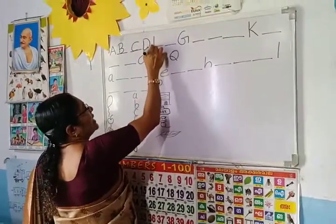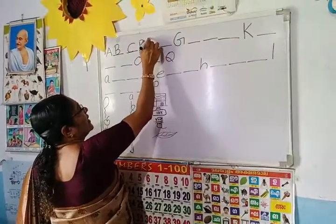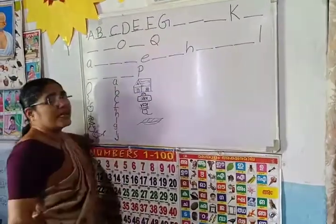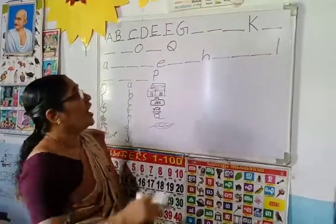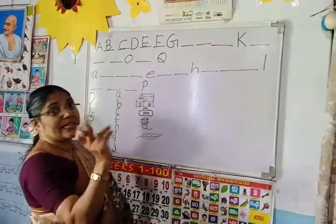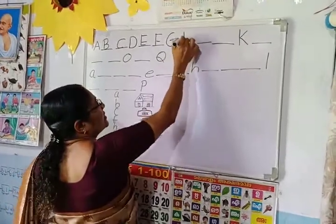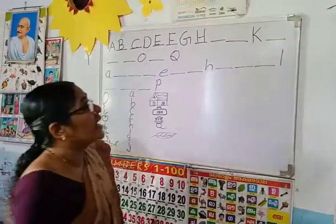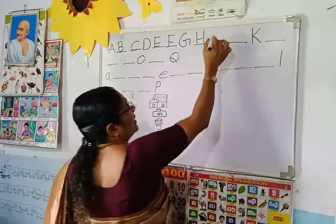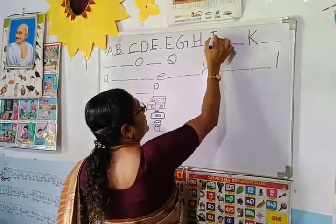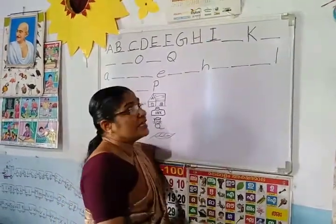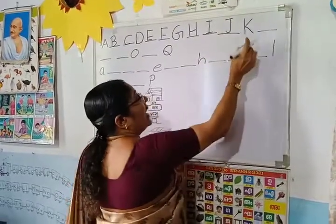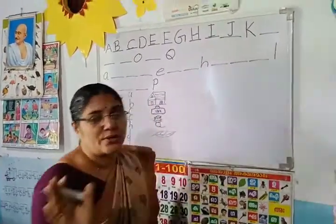After D, which letter comes? E. E after F. G is here, so no need to write G. After G, which letter comes? H. H after, which letter comes? I. I after? J. And K is here, so no need to write K.